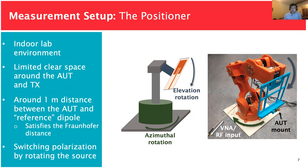That doesn't fully solve the 3D pattern issue. In our current implementation we simply pause the measurements and ask the user to manually rotate the positioner to cover the second hemisphere, then add both matrices together to produce the full 3D radiation pattern. On the source side, we use a linearly polarized wire dipole antenna — high efficiency with uniform radiation patterns. To change polarization, we simply rotate the source by 90 degrees, which explains the relatively high cross-polarization levels seen later in the slides.